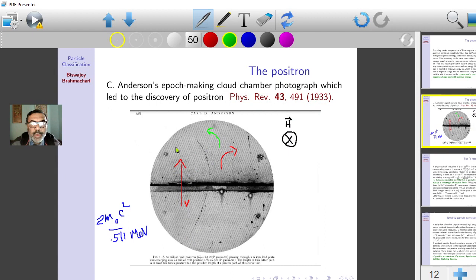That means this elementary particle, which has mass equal to the mass of electron, has positive charge. That is a positively charged electron, which is what was discovered by this epoch-making...